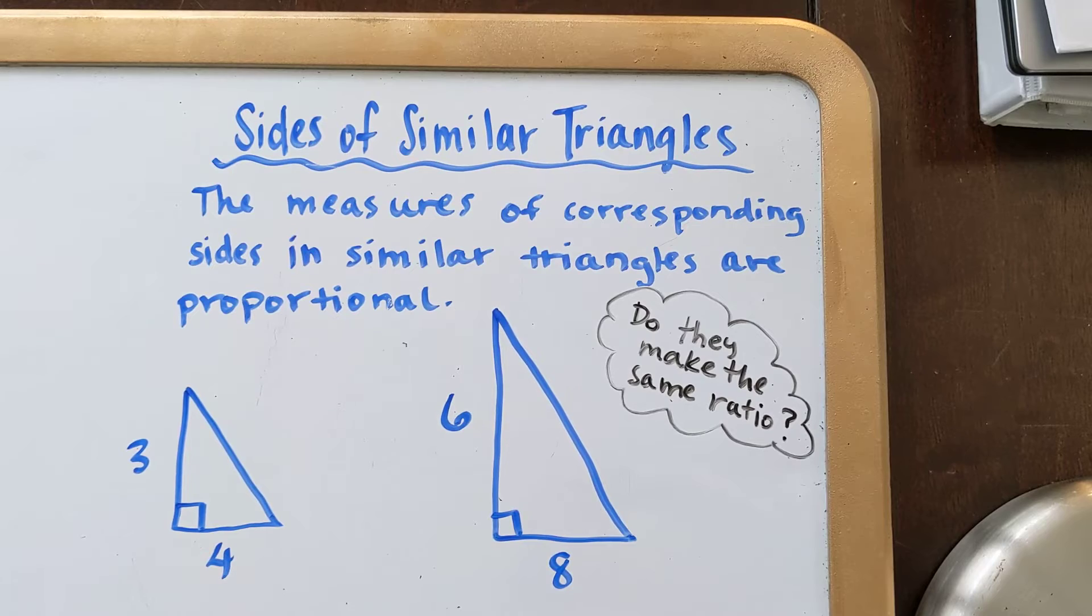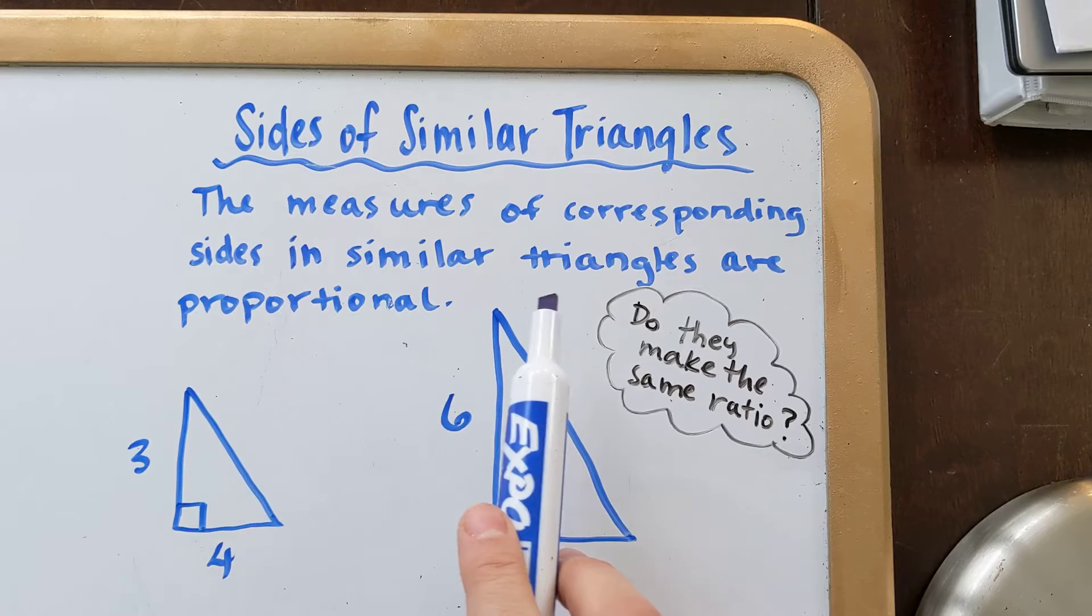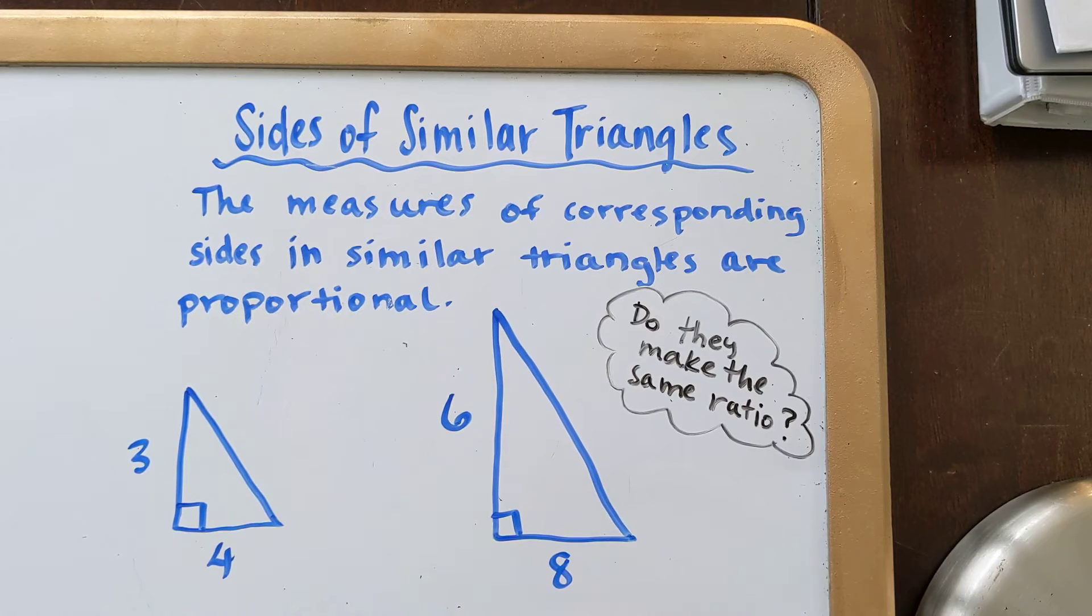So here's the property that we're looking at: the measures of corresponding sides in similar triangles are proportional. That probably seems like just a bunch of mumbo-jumbo, but what we're really trying to figure out is do they make the same ratio, and I'm going to run through an example to kind of clarify what's going on here.